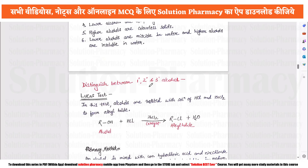Hello students, welcome to our channel Solution Pharmacy. As you know, we were studying alcohols and physical properties. Our next topic is to distinguish between 1st degree, 2nd degree, and 3rd degree alcohols. Students, if you want these notes, please download our app Solution Pharmacy — notes are available there. Let's start class.